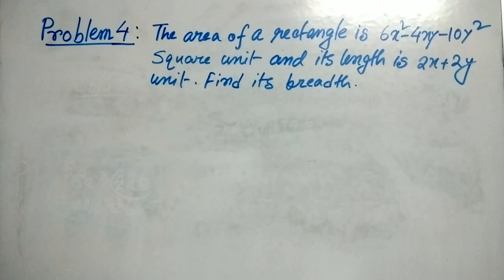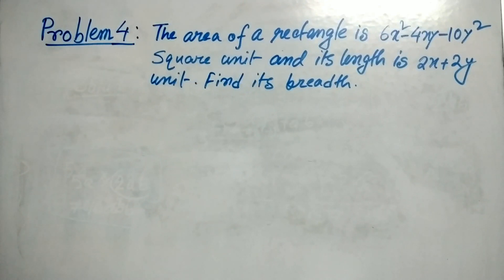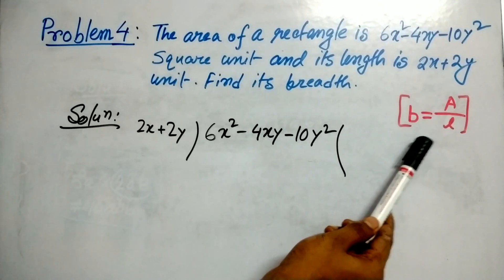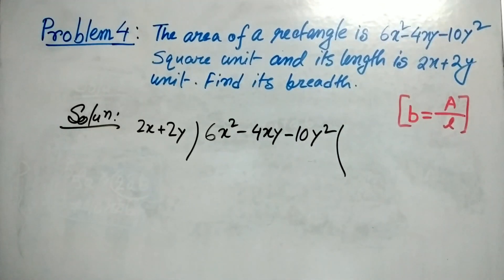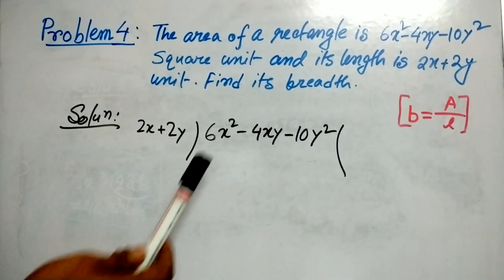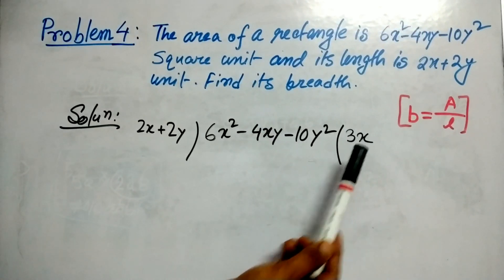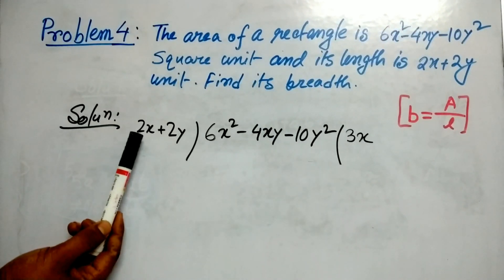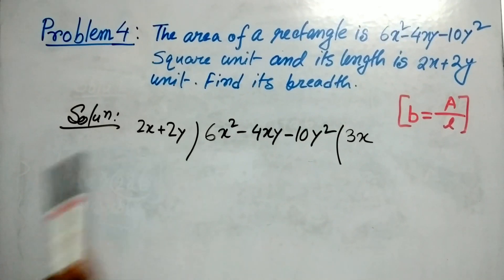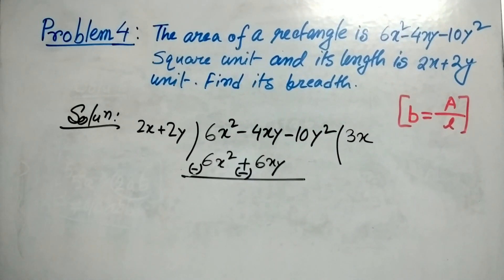The area of a rectangle is 6x squared minus 4xy minus 10y squared square units, and its length is 2x plus 2y units. Find its breadth. As we know, breadth equals area divided by length, so we will divide this area by the length. The process is the same — we find 3x by which we multiply 2x to get 6x squared.